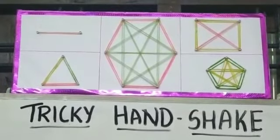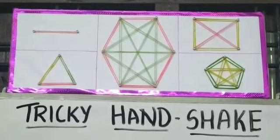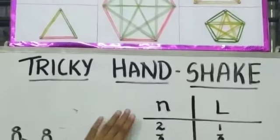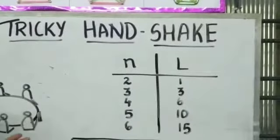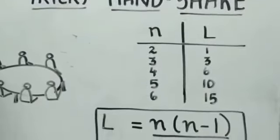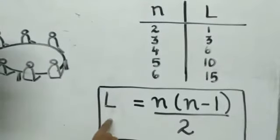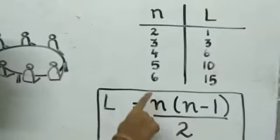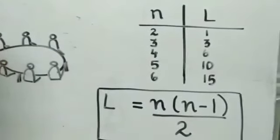If we see the number of points and number of line segments, there is some sort of relation between them. It is then that we arrive at an equation: n into n minus one by two. For finding number of line segments, we need n into n minus one by two, where n is the number of points.